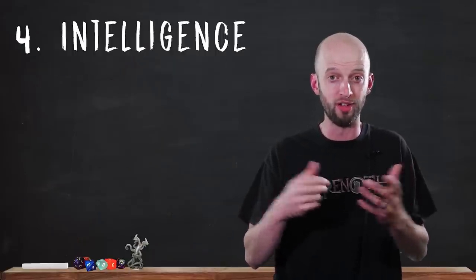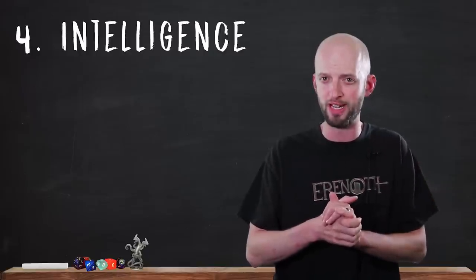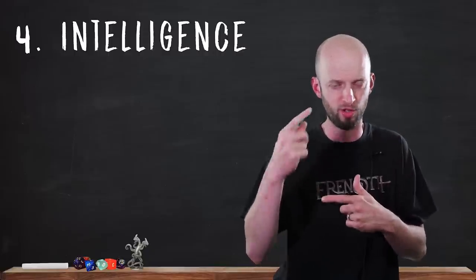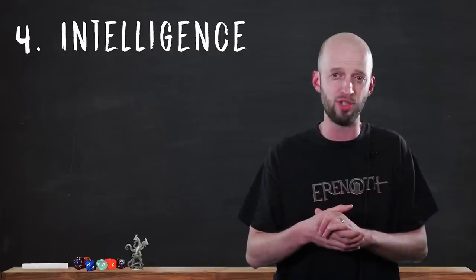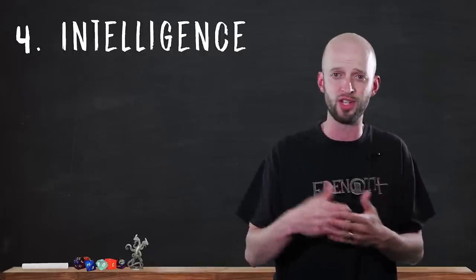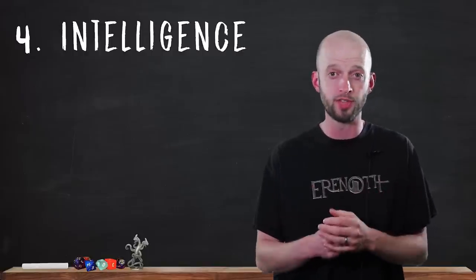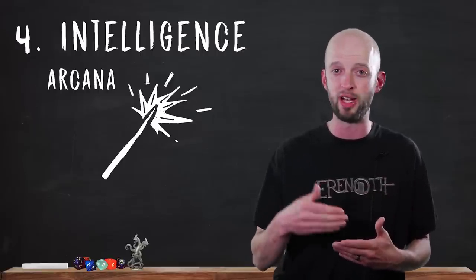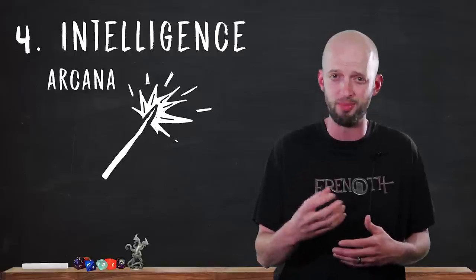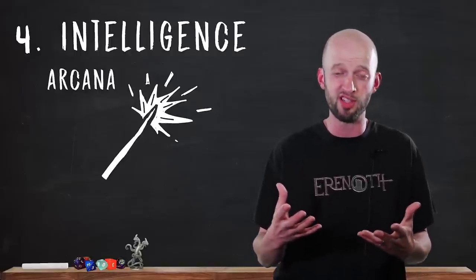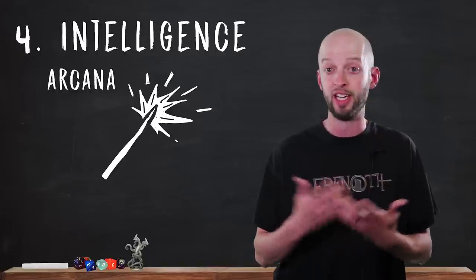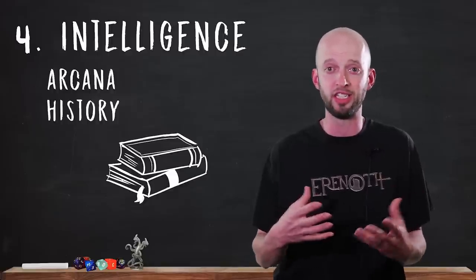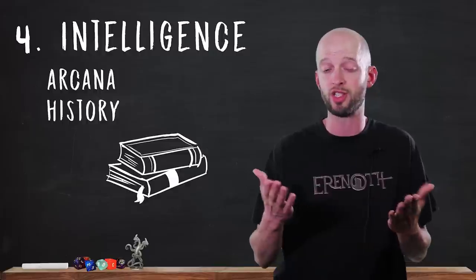The fourth ability on our list, Intelligence. Intelligence measures your mental ability, your ability to recall and reason. I think of it more as book smarts, as opposed to wisdom, which we'll get to in a minute. An intelligent person would probably do very well in school. You have likely studied things, and you have a sharp mind and memory. There are a lot of skills that use Intelligence. The first is Arcana. It's a character's ability to recall lore about spells, magic items, eldritch symbols, magical traditions, other planes of existence, and a lot of other things like that. History. This one's pretty obvious. Used to recall historical events, famous people of the past, ancient kingdoms, wars and conflicts of the past, and lost civilizations.